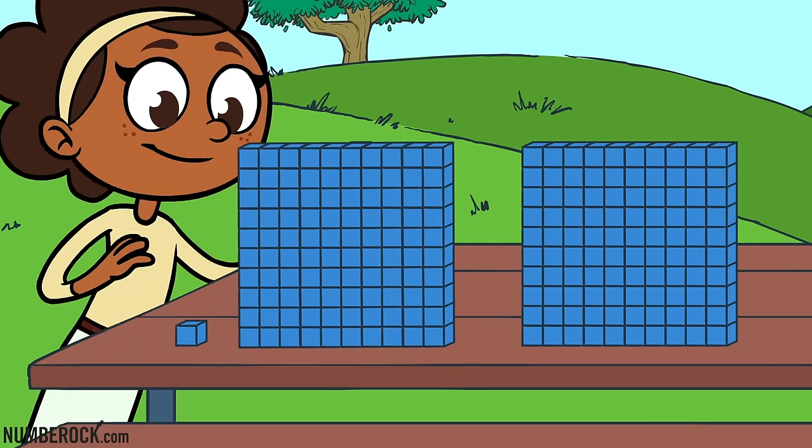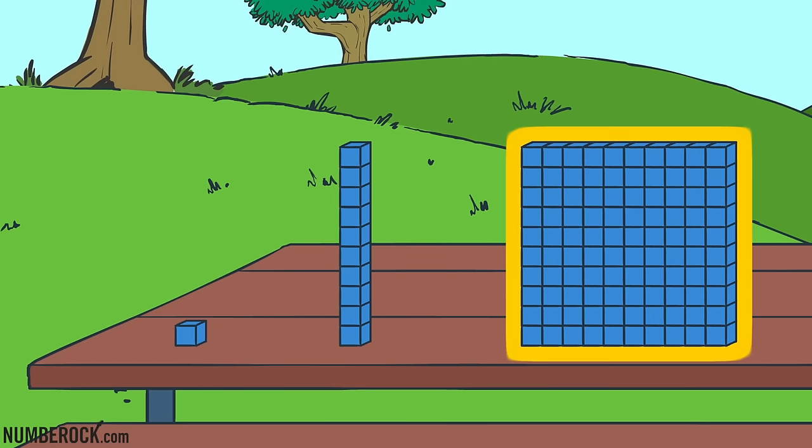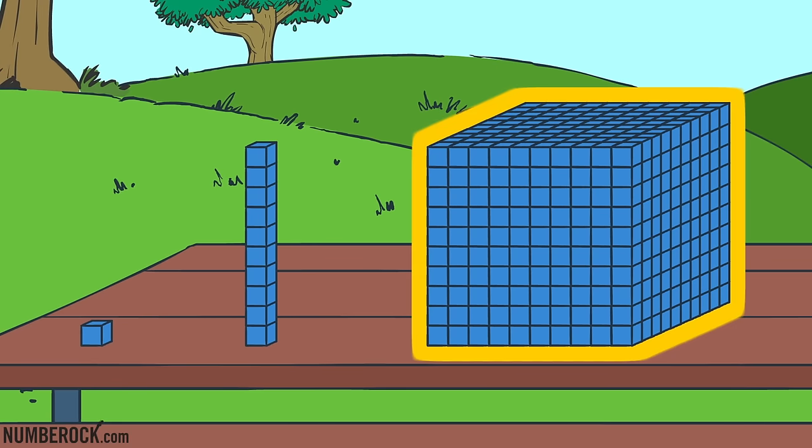And after lining up 10 tens, 100 comes into existence. And 10 hundreds will forever make 1,000 all together. So now let's review them.